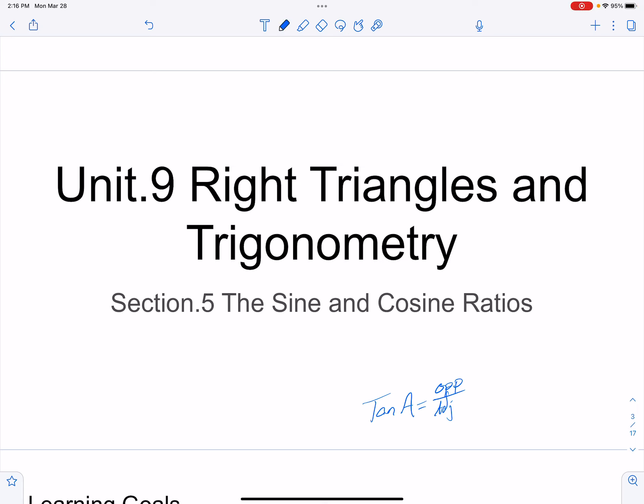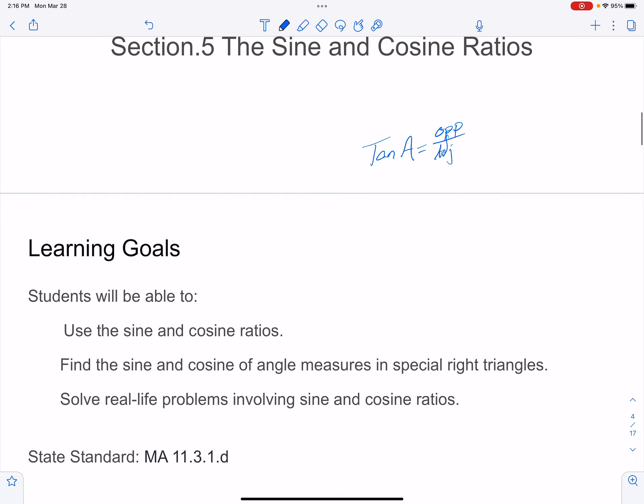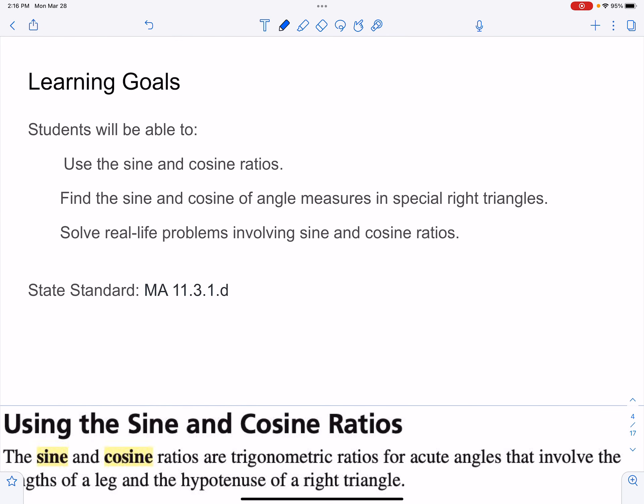Okay, we've already talked about the tangent ratio. Today we're going to learn about sine and cosine ratios. It's going to be pretty similar in types of problems. We're going to have to set up some ratios and solve. So today the learning goals are to be able to use sine and cosine, find angle measures, find missing sides, and solve some real-life problems.